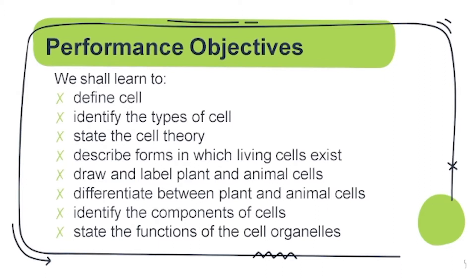In this topic, these are the objectives we want to achieve. We shall learn to define cell, identify the types of cells, and state the cell theory. We shall also learn to describe different forms in which living cells exist, draw and label both plant and animal cells, differentiate between them, and identify the components of cells and their functions.